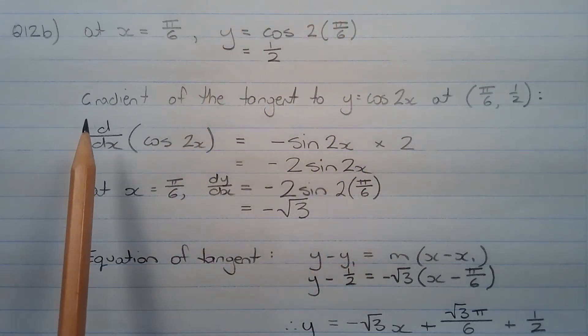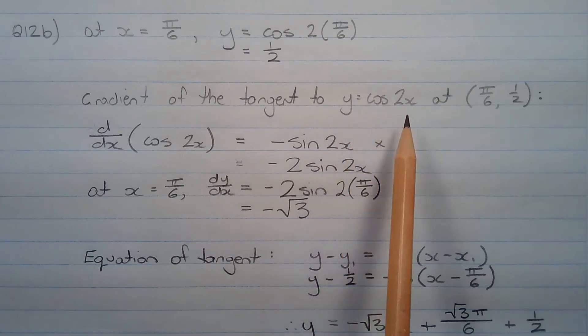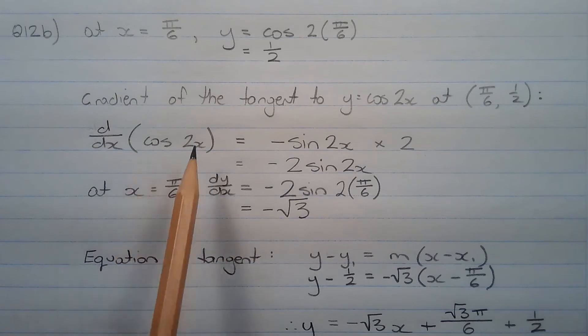The next step is to find the gradient of the tangent to the curve y equals cos 2x at the point pi over 6 comma half. And we do that by finding the derivative of cos 2x.